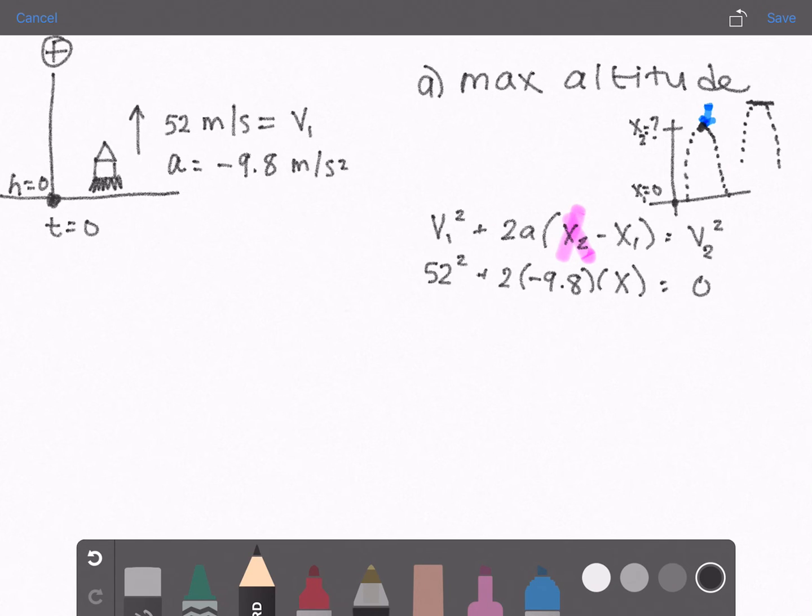So when you do all of this math and solve for x you get 138 and I'm going to round to two significant figures, that's 140, and units is meters. That is the max altitude that this rocket will go.